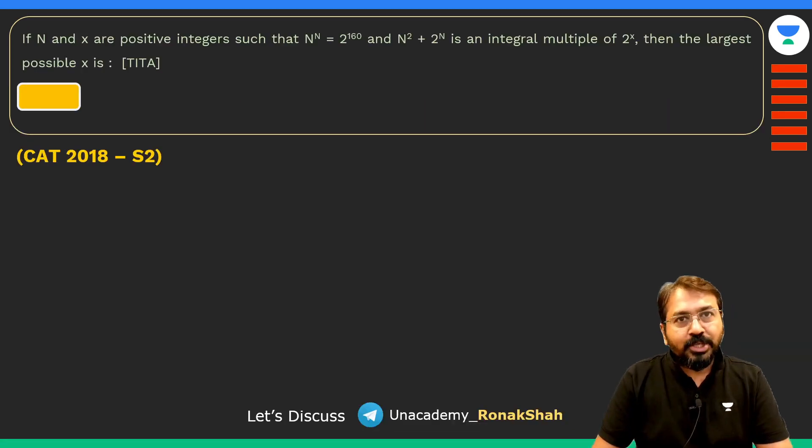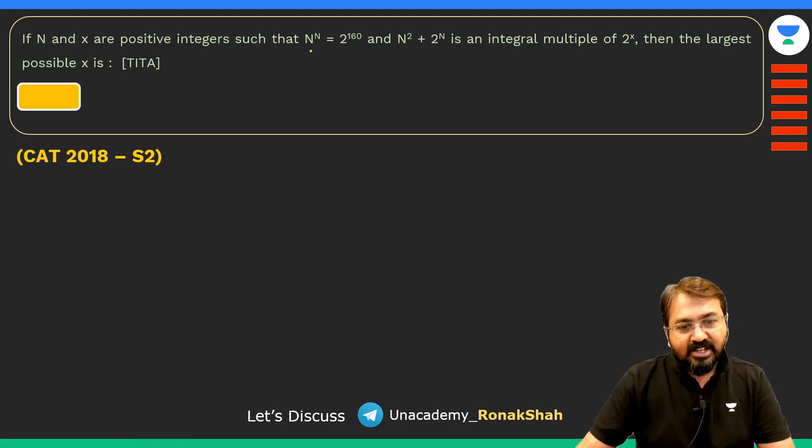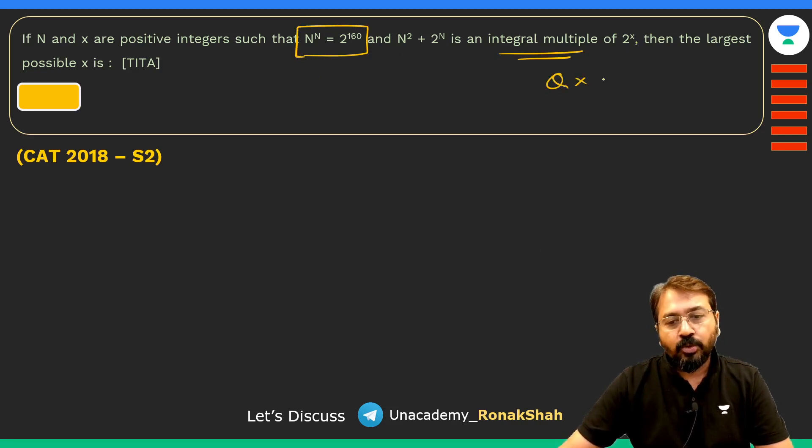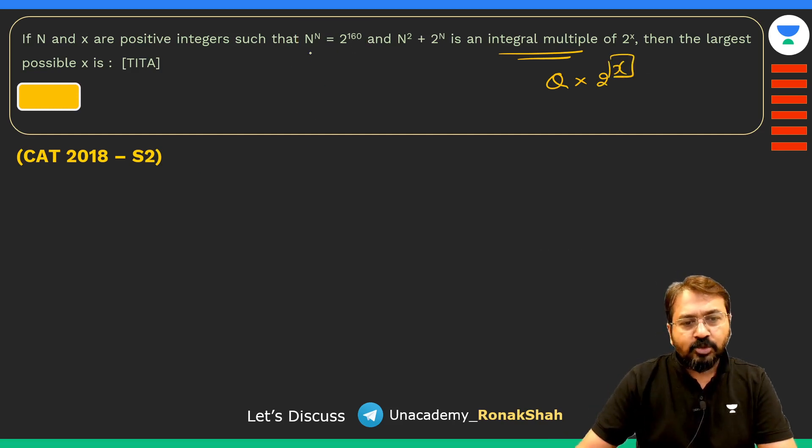The actual question goes like this: If N and X are positive integers such that N^N = 2^160 and N² + 2^N is an integral multiple of 2^X, and that's why we had written it as Q × 2^X, we need to find out the largest possible value of X.